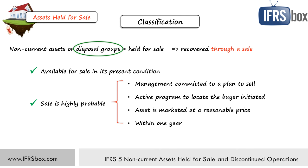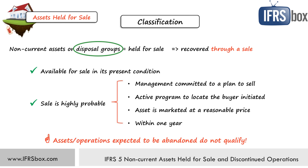Be careful: assets, disposal groups, or operations that you plan to abandon do not qualify for classification as held for sale, because they will be recovered through their continuing use and not through a sale. However, you would still need to present some of them as discontinued operations. They might be reported separately as discontinued operations, but you would not measure them as assets held for sale.